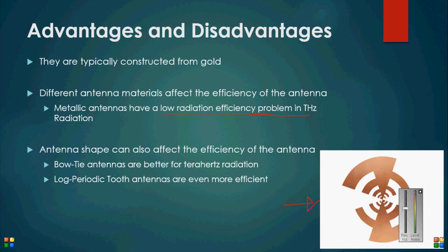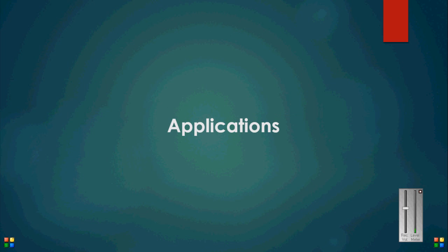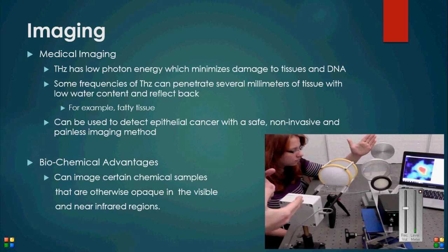Moving on to some specific applications, the two main everyday uses are imaging and communication. Because of its low photon energy and harmlessness to human tissue, terahertz imaging is safe, less invasive than x-ray, and good to use for medical purposes as it can still penetrate several millimeters of tissue with some reflection. Furthermore, terahertz radiation is used to detect epithelial cancer cells. This process is painless, safe, and non-invasive. Here we can see terahertz radiation being used to scan the hand of an individual with no protection, outlining the safety of these signals.